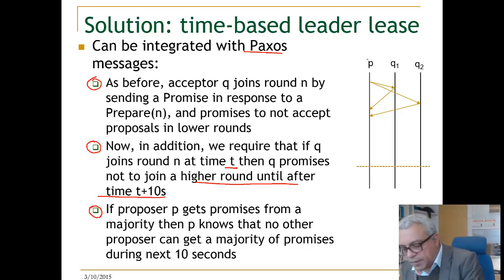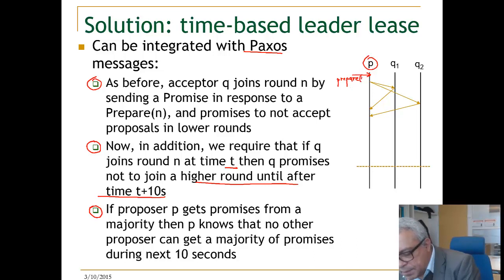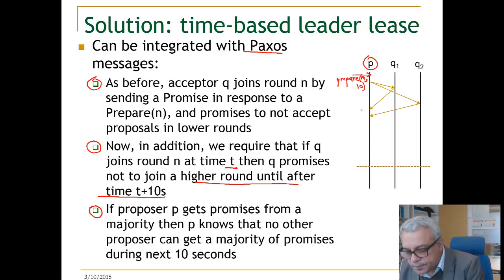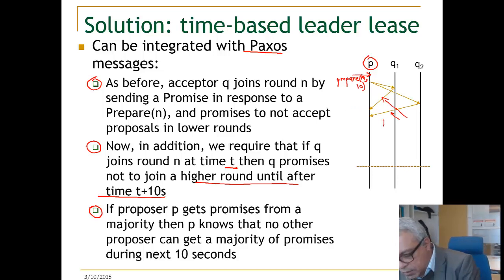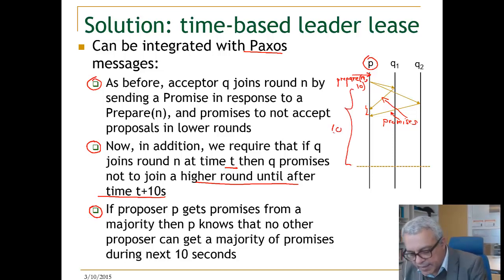We have a proposer and two acceptors. The proposer sends a prepare message, which not only signals 'I am preparing for round N' but also says 'I am preparing for round N for 10 seconds.' Each acceptor sends back a promise. Once the proposer receives both promise messages, he knows he is now a leader for a period of time — say 10 seconds.